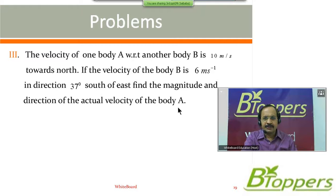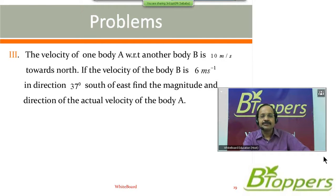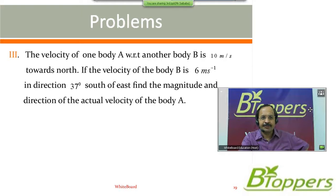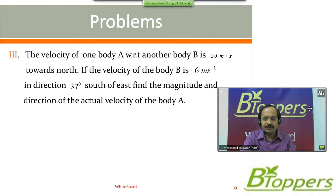You are asked to find the actual velocity of body A, which means you are not given it directly. You are given the relative velocity of body A with respect to body B as 10 meter per second towards north, and the velocity of the second body B as 6 meter per second in the direction 37 degrees south of east. You can take a pause and try it yourself, otherwise look at the solution.